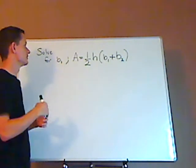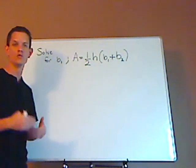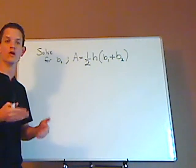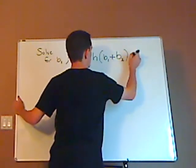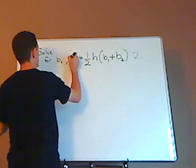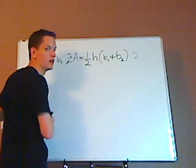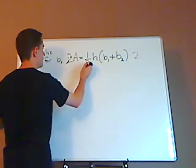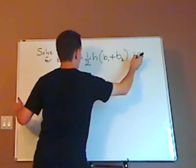Right, you would do the opposite. The opposite of one half would be its reciprocal so you would multiply it by 2. So first multiply both sides by 2. When you multiply both sides by 2 this cancels out with this.